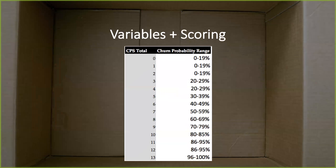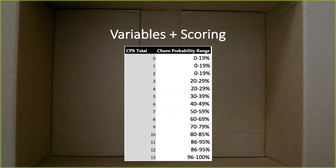Now let's dive into the variables and scoring. Our scale was zero to 13, and based on historical data, we looked at the probability of churn within those ranges — that's how we came up with this scoring. Yours might be simpler: if someone is a one, they have a zero to 20% chance; a two, 20 to 40%, and so on. Ours was based on historical data quarter over quarter that we ran a regression analysis on. In this model, if someone scores a 10 in their CPS scoring, they're at 80 to 85% of their revenue at risk — pretty significant. Whereas if they're a two, zero to 19% of that revenue is at risk.